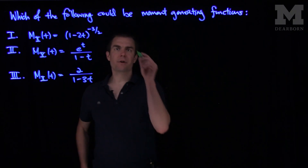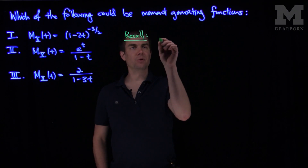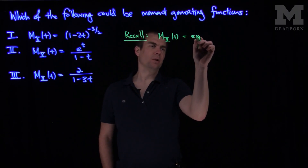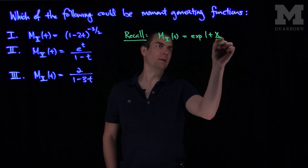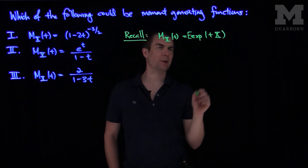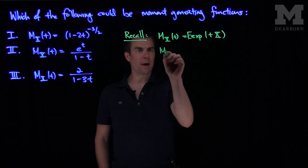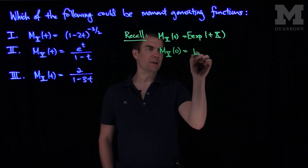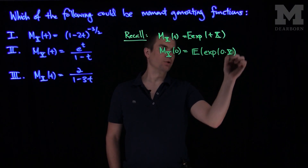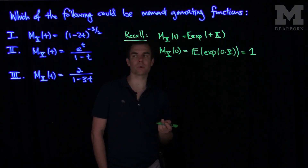Let's recall the definition of the moment generating function. The moment generating function of a random variable X as a function of t is the expected value of e^(tX). In particular, we can note that m_x(0) is the expected value of e^(0·X), which is just 1. So the moment generating function evaluated at 0 is always equal to 1.